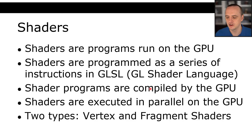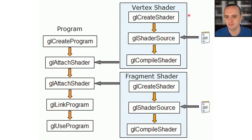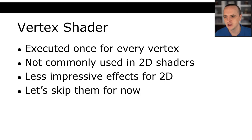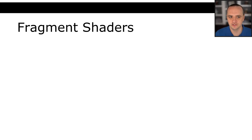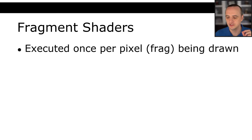We will be more interested in fragment shaders in this lecture, because fragment shaders are basically all that you have to worry about for the project. There's an entire pipeline that goes into shaders, but we aren't going to discuss the pipeline - it's all handled under the hood for you anyway. Vertex shaders are executed once for each vertex in a data structure that you want to draw to the screen. They are not commonly used for 2D shaders and have less impressive effects for 2D, so we're going to skip them. Fragment shaders, on the other hand, are more interesting - the shader itself is executed for every pixel that is being drawn, in parallel by the GPU.